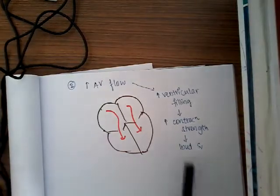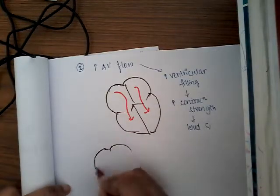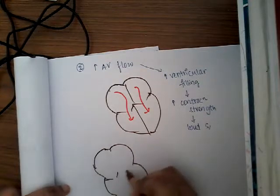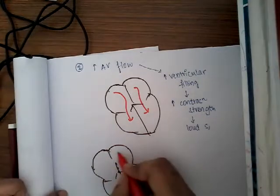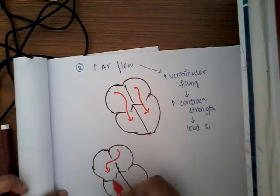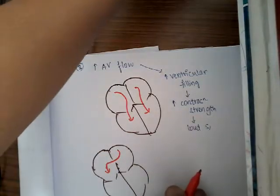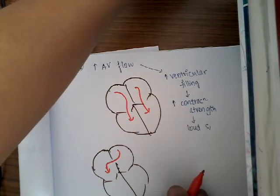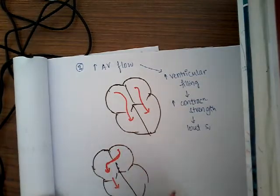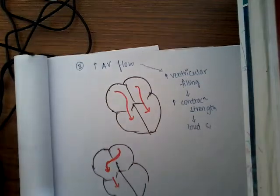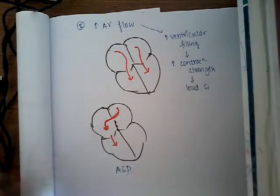What are the causes of increased AV flow? There are two conditions. First is atrial septal defect. In atrial septal defects there is increased blood in the left atria, which causes increased contraction of the ventricle, thus causing loud S1.